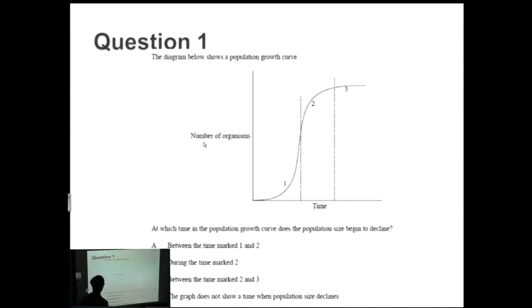At which time in the population growth curve does the population size begin to decline? You need to know that the x-axis is time, and very important, the number of organisms is on the y-axis.